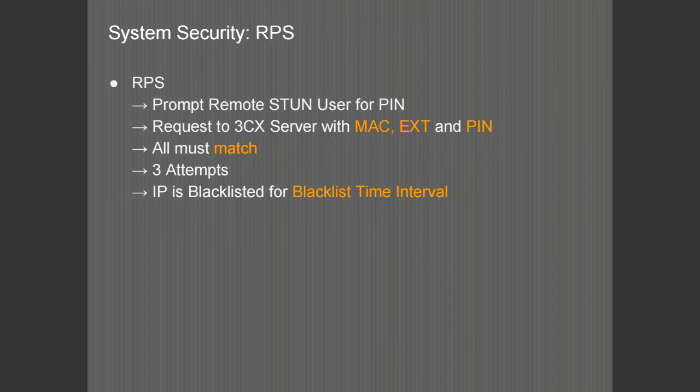Connecting to the PBX from an RPS-enabled remote extension will be prompted for a username and password. Any requests coming in will need to have a valid MAC address, a valid extension number, and a valid pin number. They must all match and you have three attempts to authenticate, or the PBX will place you into the blacklist. Note that if you have disallowed use of the extension outside the LAN, even if you put the correct credentials, you will be blacklisted.